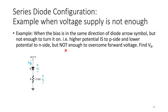Let's find VR. The supply is 0.5 volts. For this silicon diode to turn on, it needs 0.7 volts.